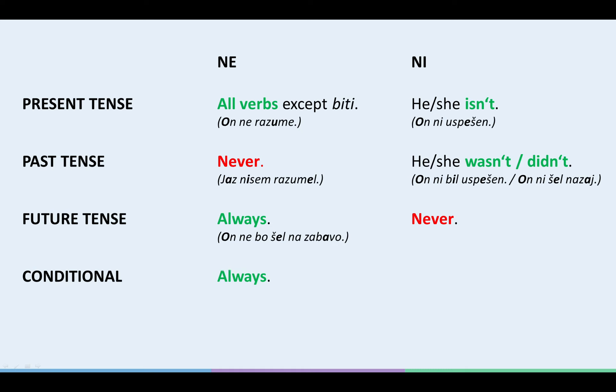With the conditional, so everything that has to do with WOULD, COULD, or the Slovene word BI, we again always use NE to negate it. For example, ON NE BI KUPIL HIŠE, ČE NE BI. HE WOULDN'T HAVE BOUGHT THE HOUSE IF HE HADN'T. And we never use NI to negate conditionals.